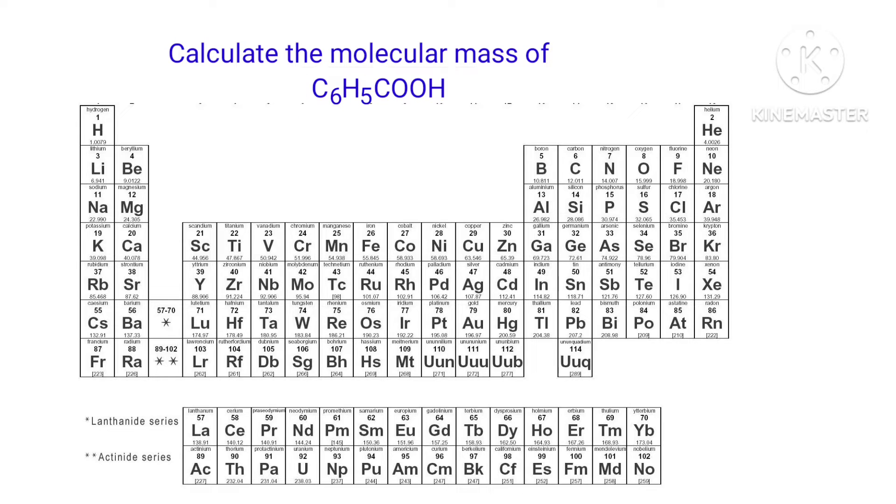In C6H5COOH there are 7 carbon atoms, 6 hydrogen atoms and 2 oxygen atoms present.